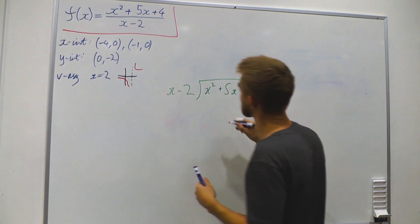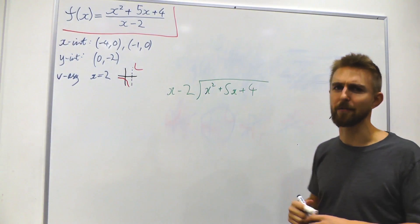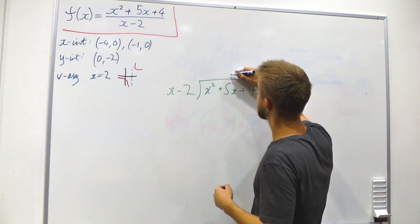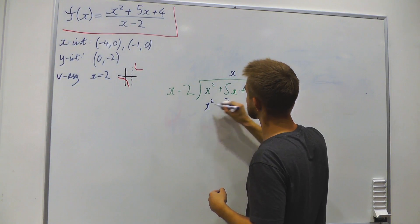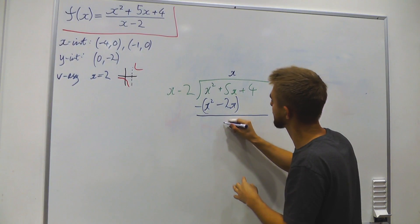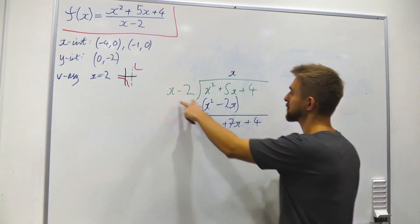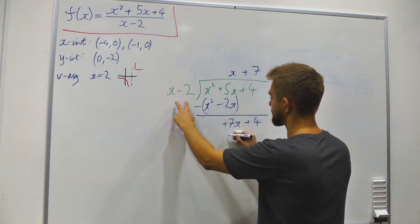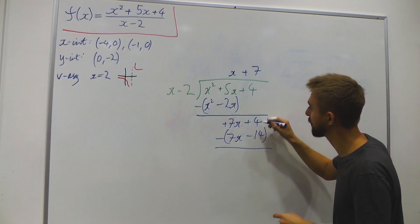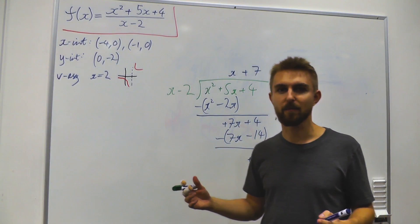Working through the long division: first, x times (x − 2) gives x squared − 2x; subtracting leaves 7x + 4. Then 7 times (x − 2) gives 7x − 14; subtracting leaves a remainder of 18. So the division gives us x + 7 with remainder 18.